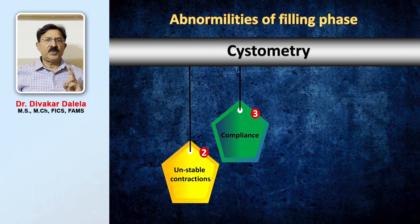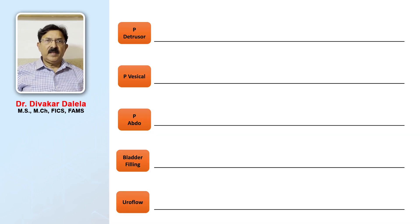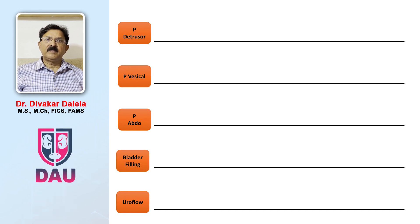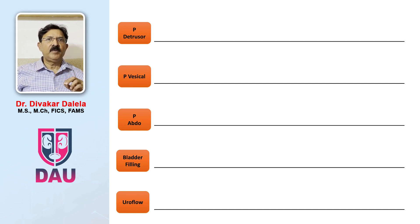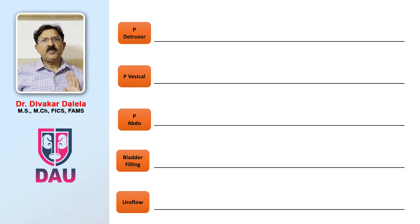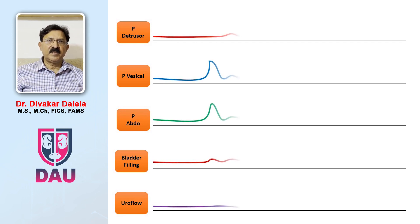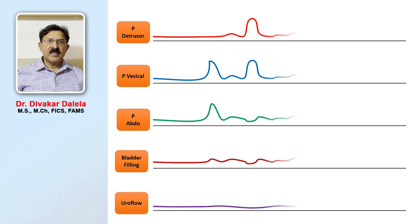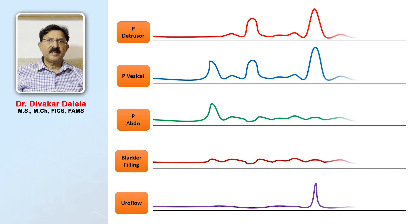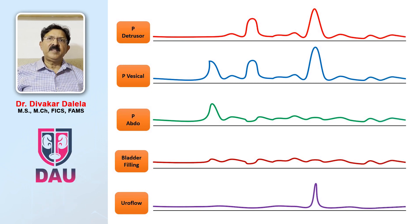Let me talk for a while on these two: the unstable contraction and the compliance. If you see a urodynamic machine screen, these are the lines that will be visible to you — five lines. Beginning from the top: P-detrusor, P-vesicle, P-abdomen, bladder filling, and uroflowmetry. This arrangement can vary on different machines, but conceptually it remains like this. When you are filling the urinary bladder, you get these kinds of movements in these lines — you notice some rise taking place, and that is how the filling phase is reaching completion.